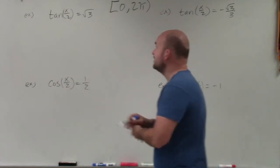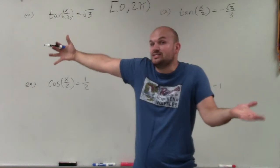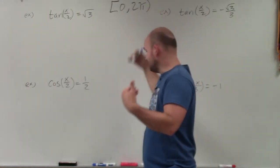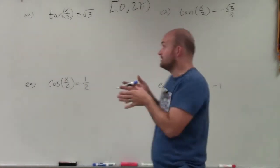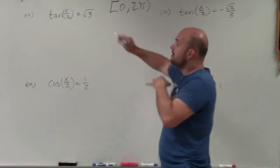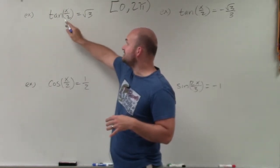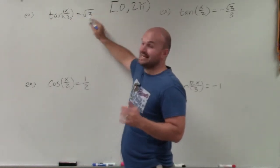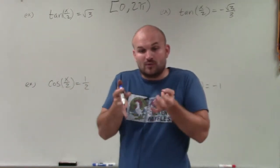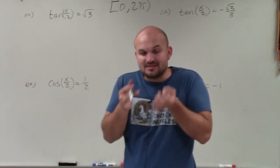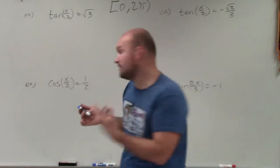First, we need to solve for tan(x/2) = √3. I need to isolate x. The way we do that is we take the inverse tangent on both sides. So if you take the inverse tangent on both sides, what you're left with is x/2 equals tan⁻¹(√3). Basically asking: what angle does tangent equal the positive square root of 3?